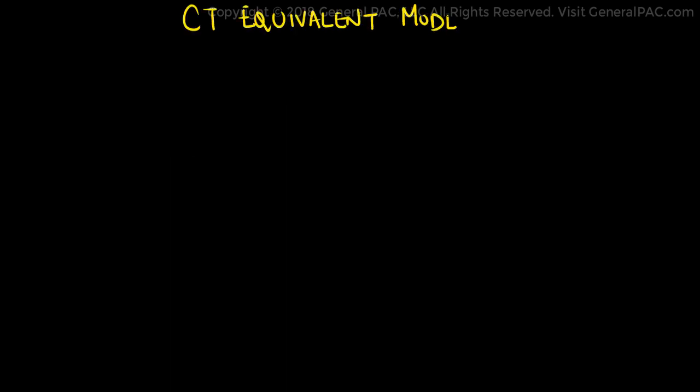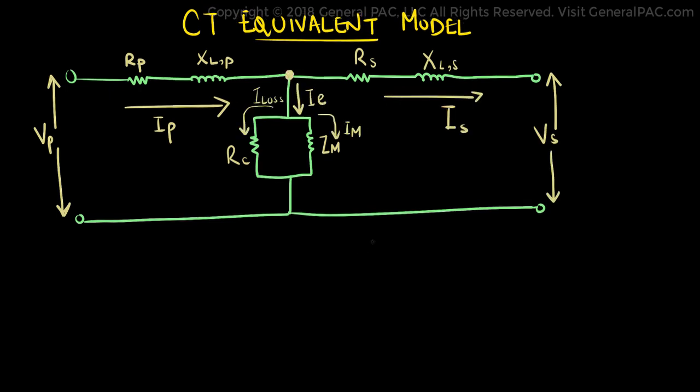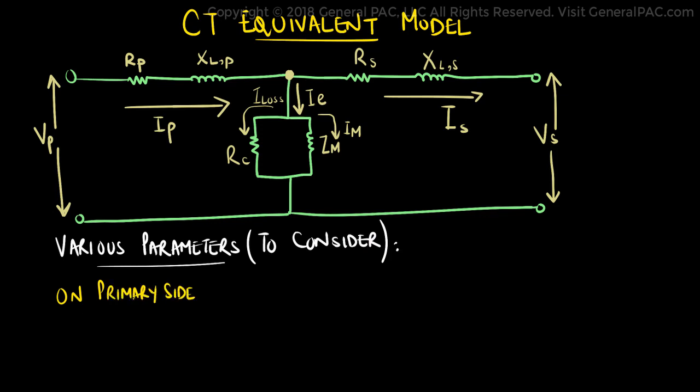Let us now consider the equivalent model of a current transformer. There are various parameters to consider. We will be going through them one by one. Let us begin by considering the parameters on the primary side of the current transformer.